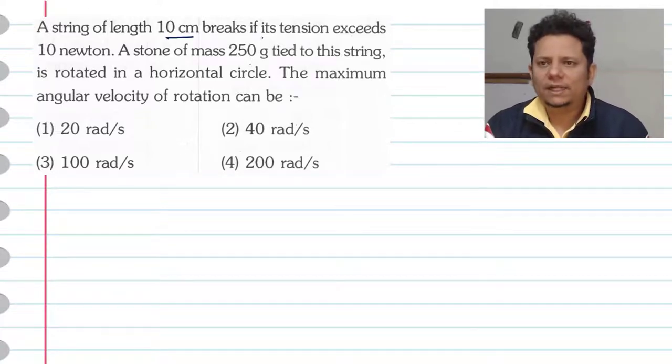A string of length 10 cm breaks if its tension exceeds 10 N. A stone of mass 250 gram tied on this string is rotated in a horizontal circle.